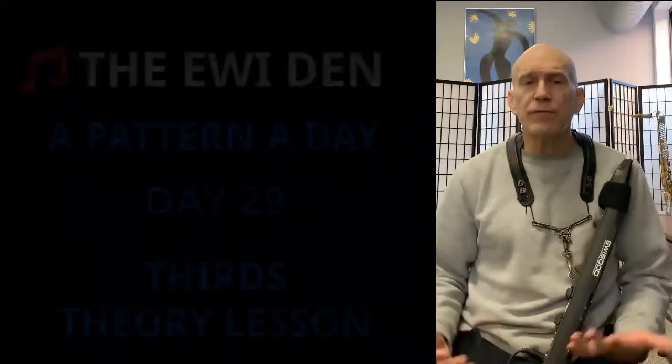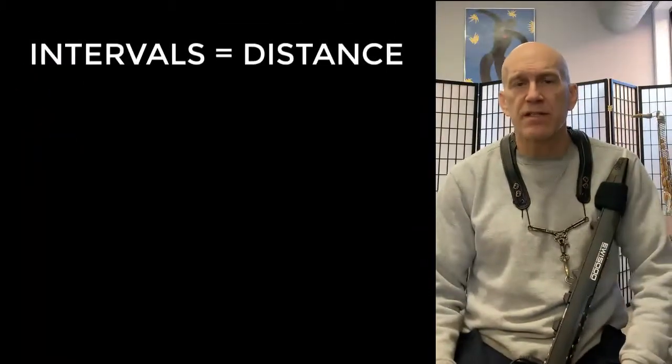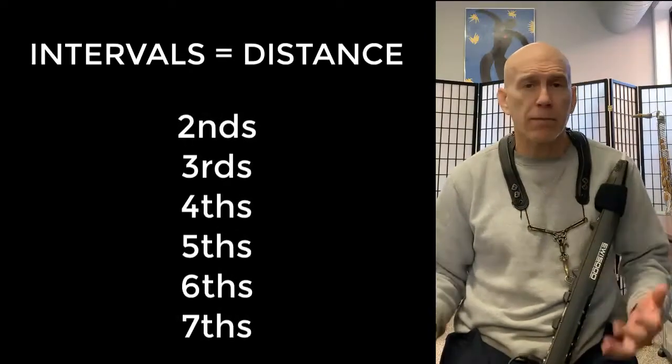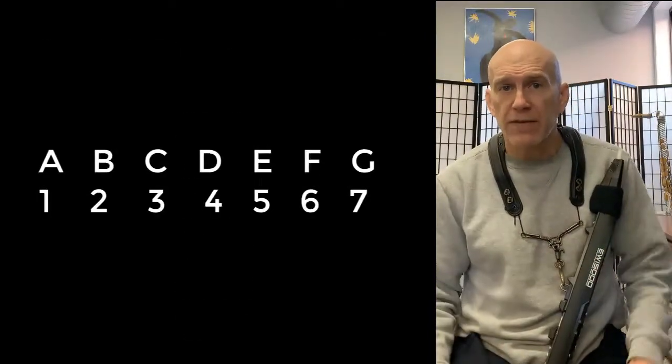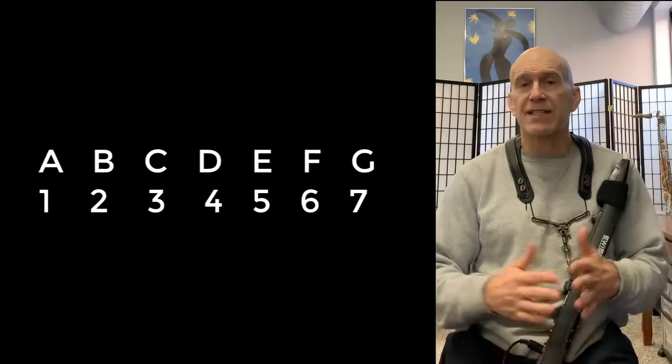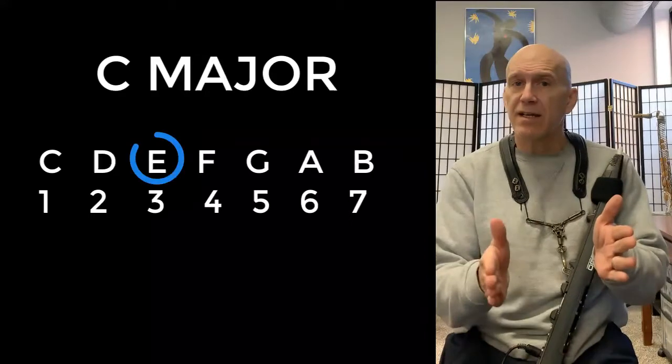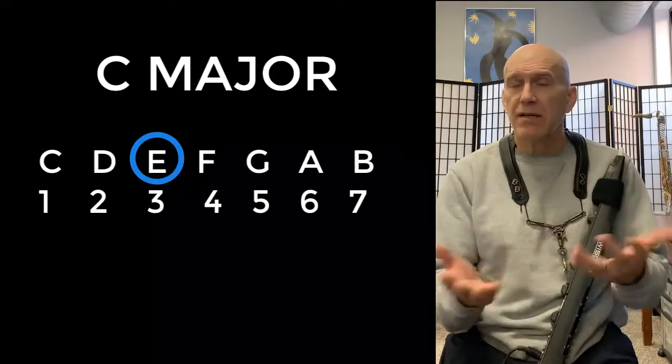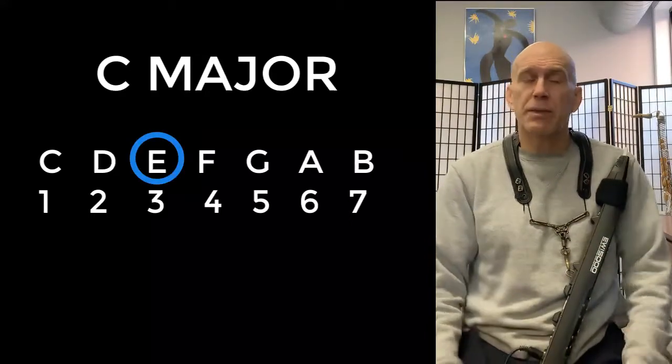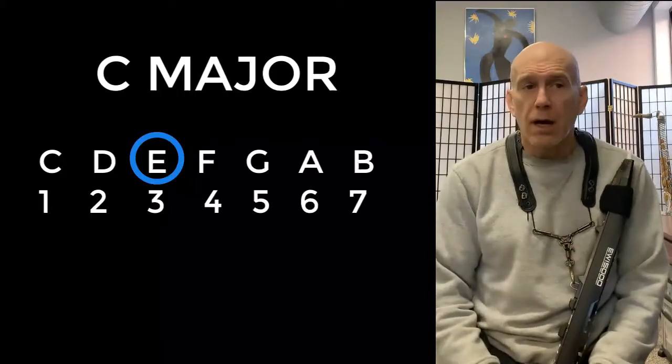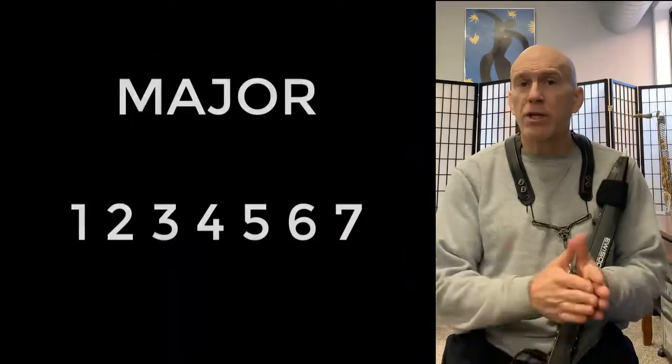So intervals are the way we measure distance and in music we call them seconds and thirds and fourths and fifths and really what it means is how many consecutive letters of the alphabet have you moved. So if we take a C scale and we want a third to be C, D, E. So C to E is called a major third because it's derived from a major scale and you can do that from any major scale and that's why we use the numbers.